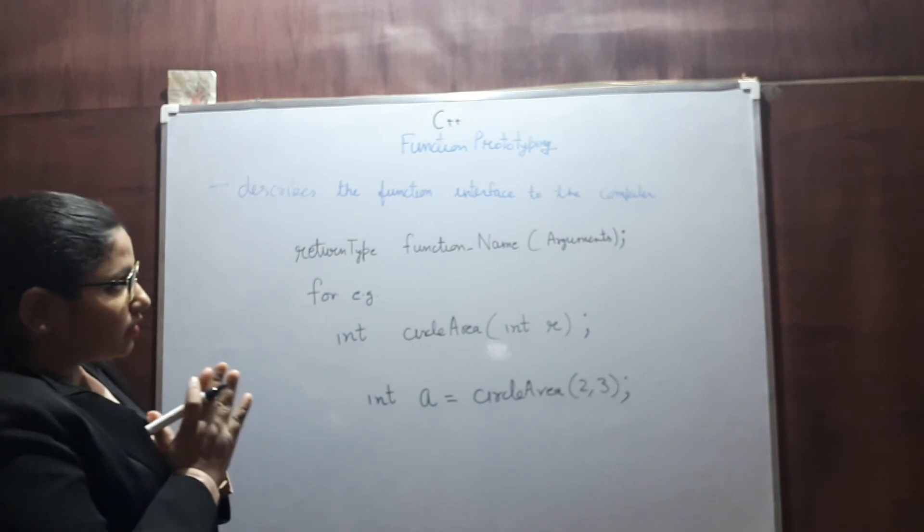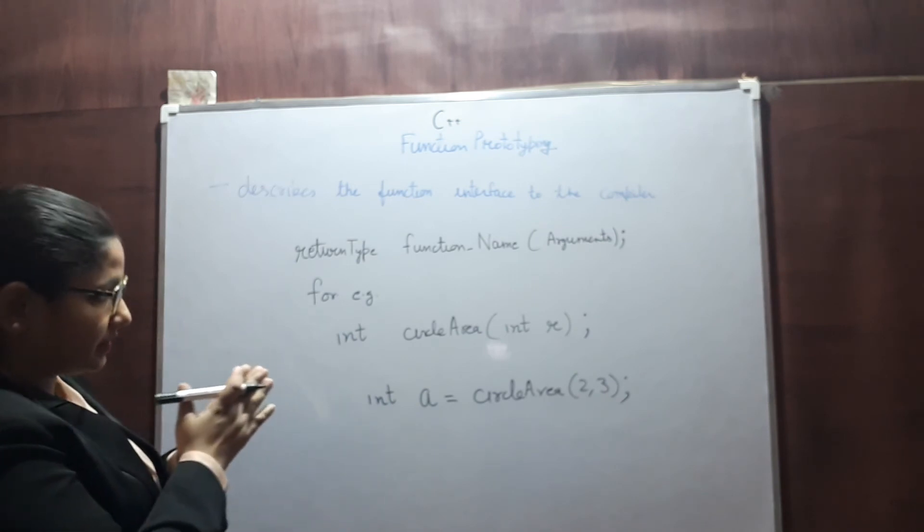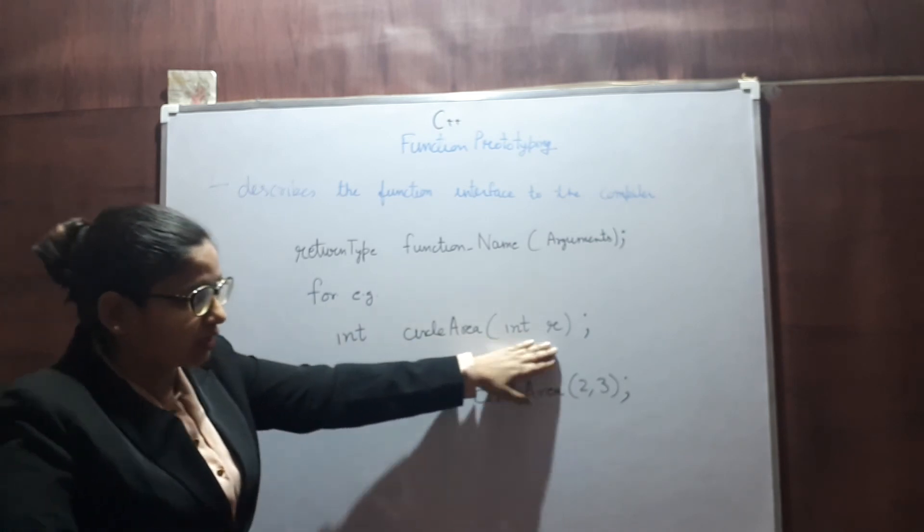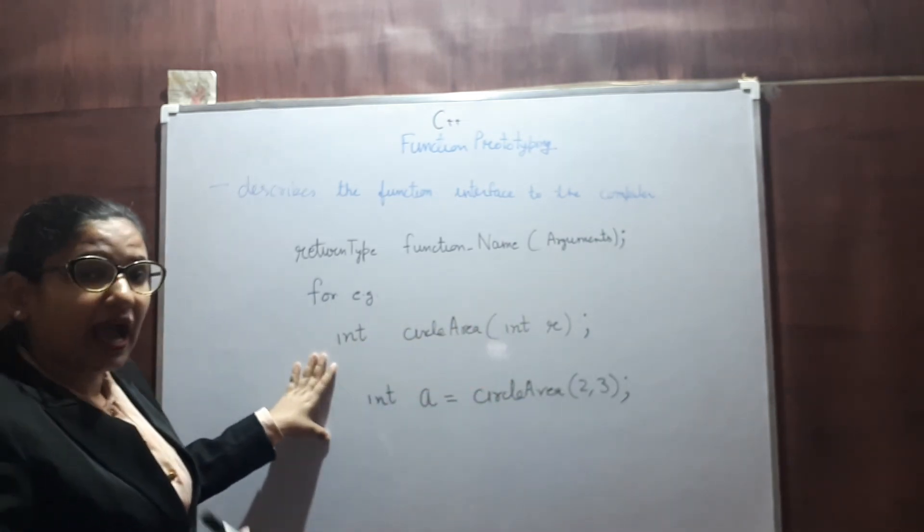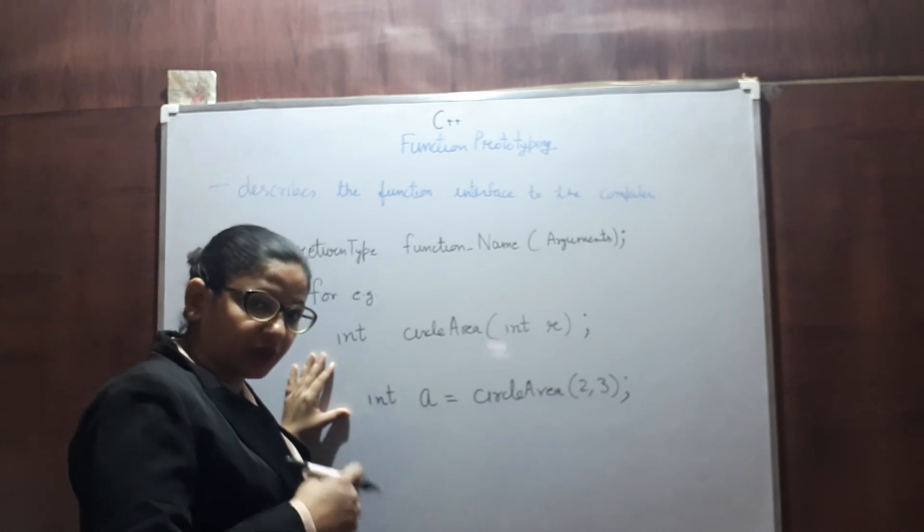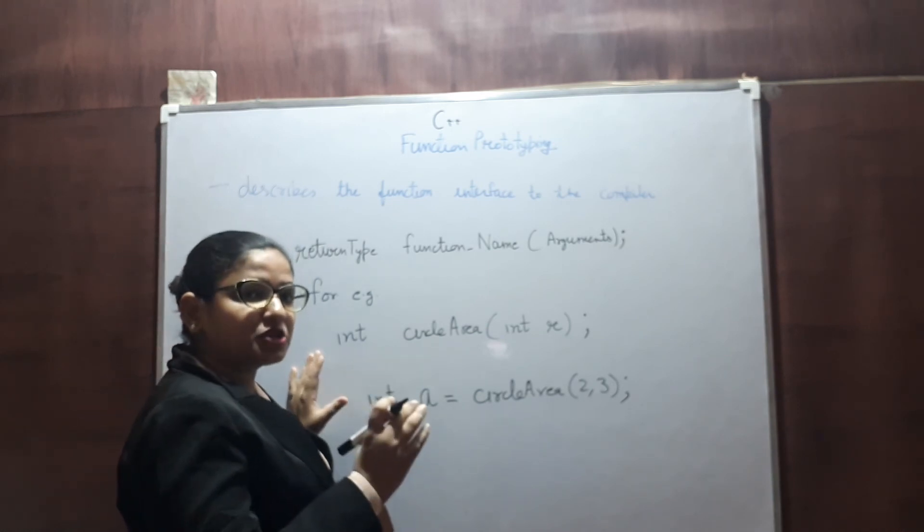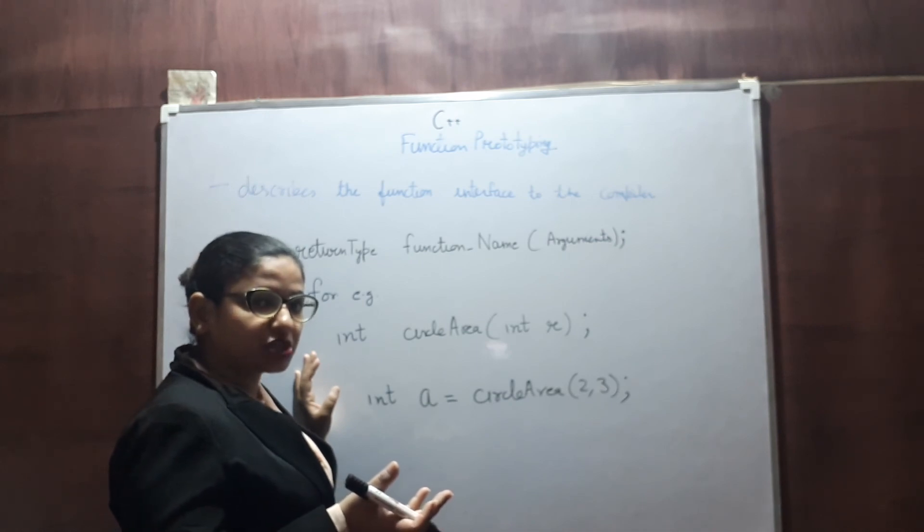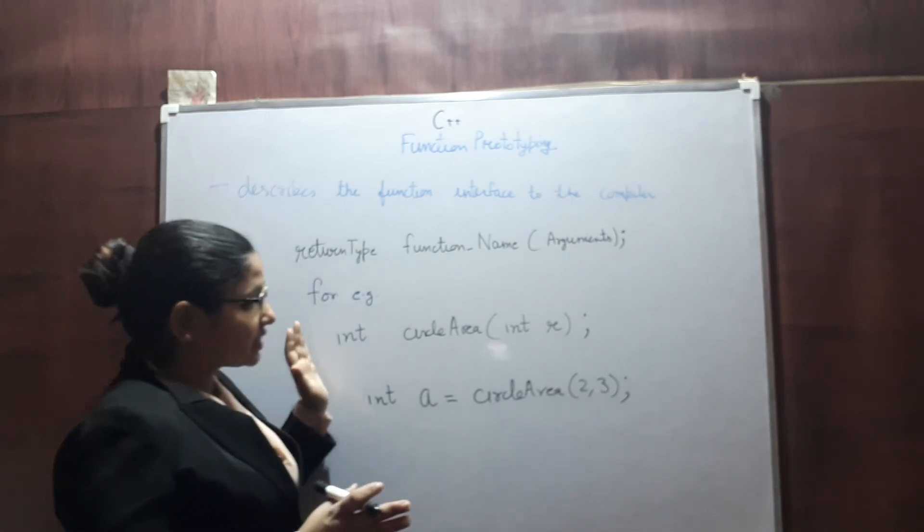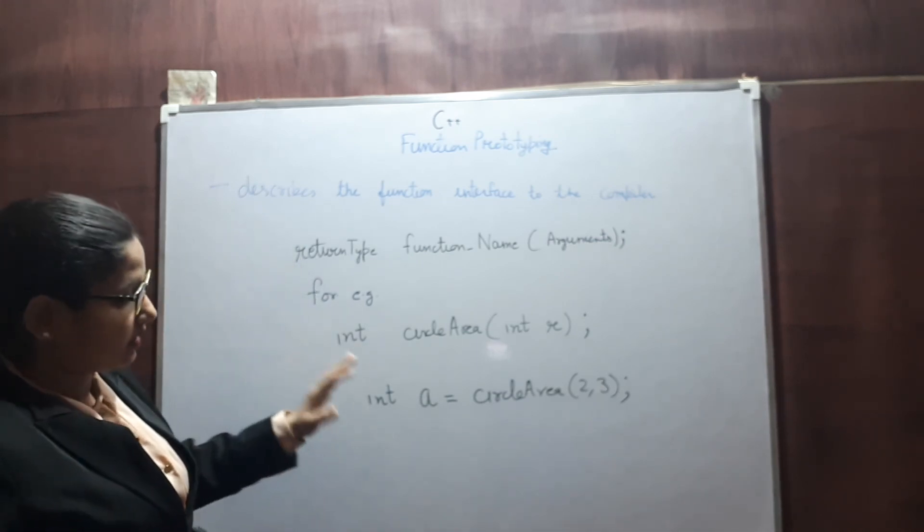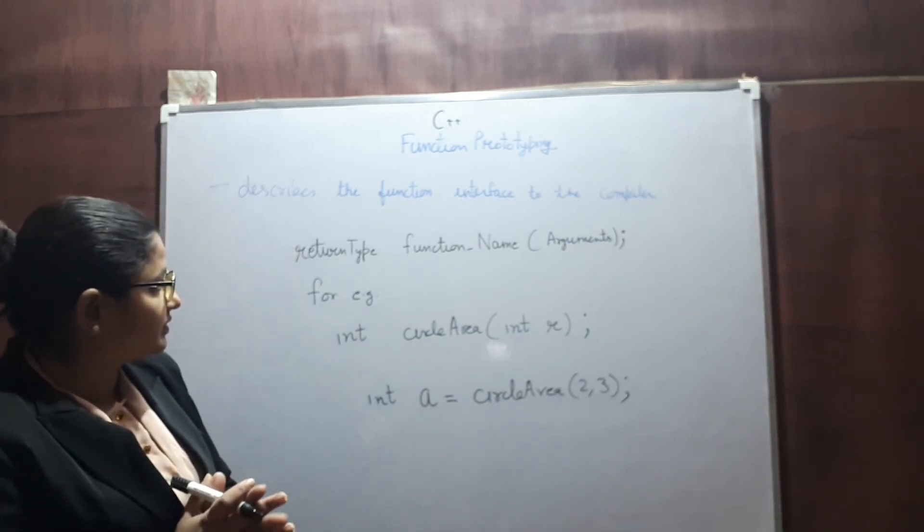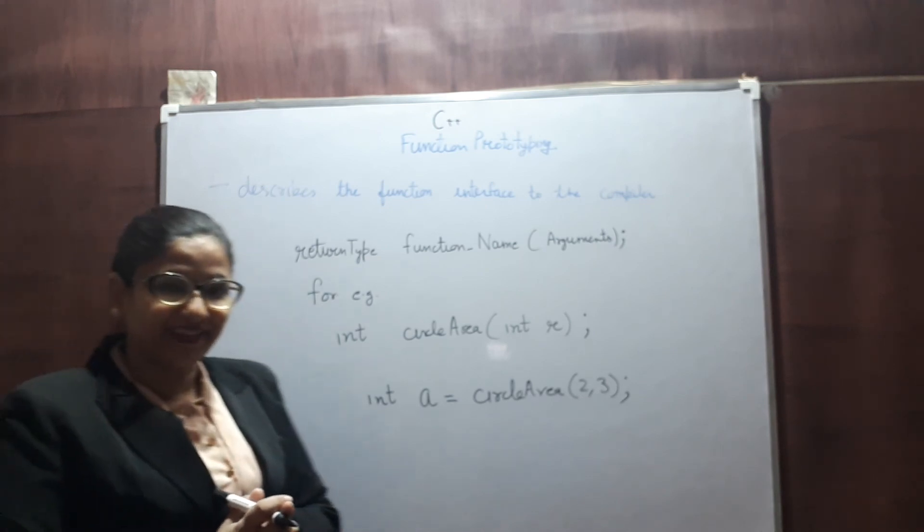So in function prototype, you have function name, input arguments, and return type, and your compiler uses this information to find out mismatch at compilation time. This type of checking is known as strong type checking. Thank you.